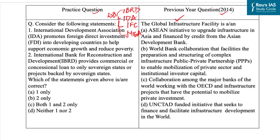The first statement is: International Development Association promotes foreign direct investment into developing countries to help support economic growth and reduce poverty. This statement is incorrect, because this is done by the Multilateral Investment Guarantee Agency, not IDA.